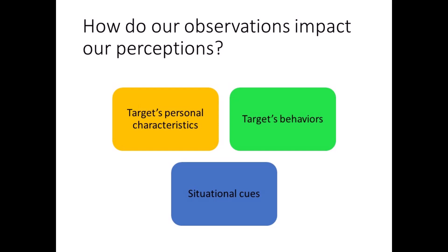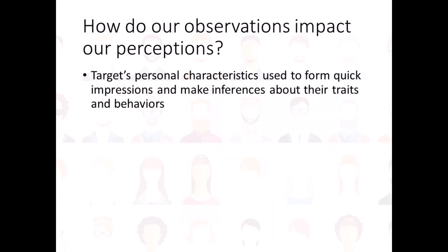Based on these thin slices of information, we either make a snap judgment about the target, or we take the time to make attributions about their disposition. Let's start with the target's personal characteristics, like their physical appearance, name, and facial features, to name a few. When we first meet someone, we use this information to make inferences about their traits and behaviors.